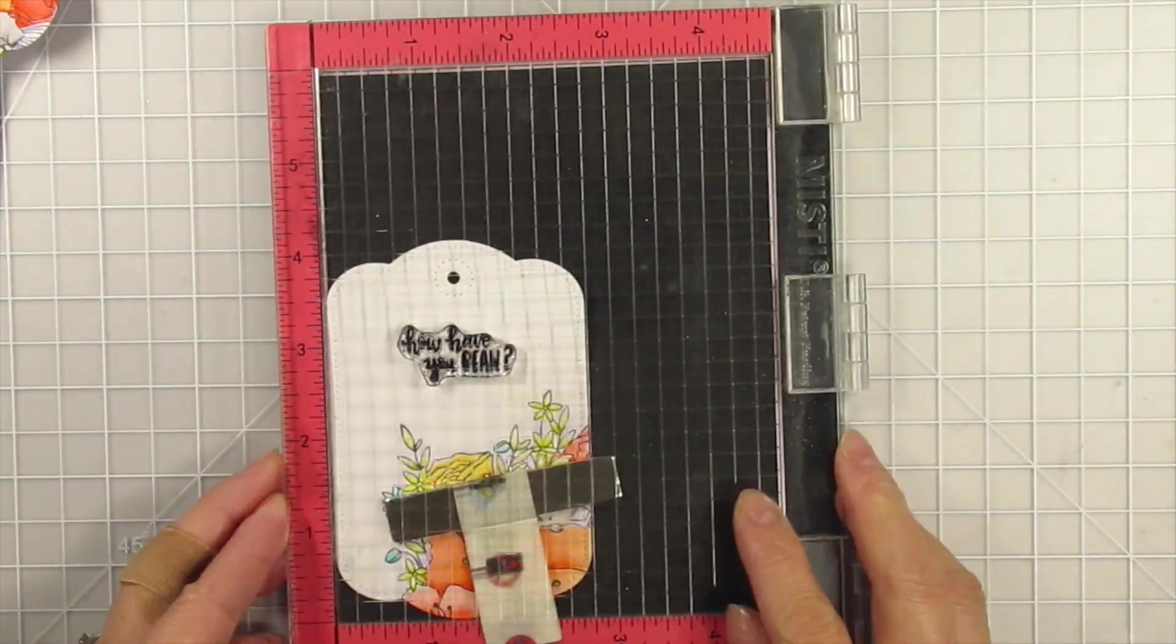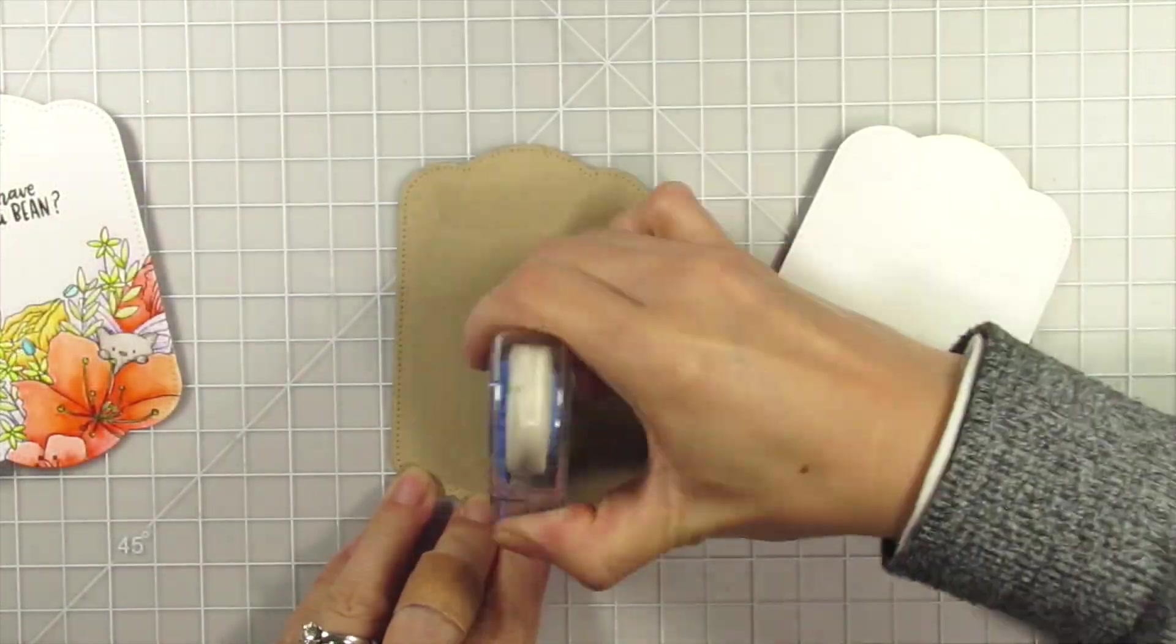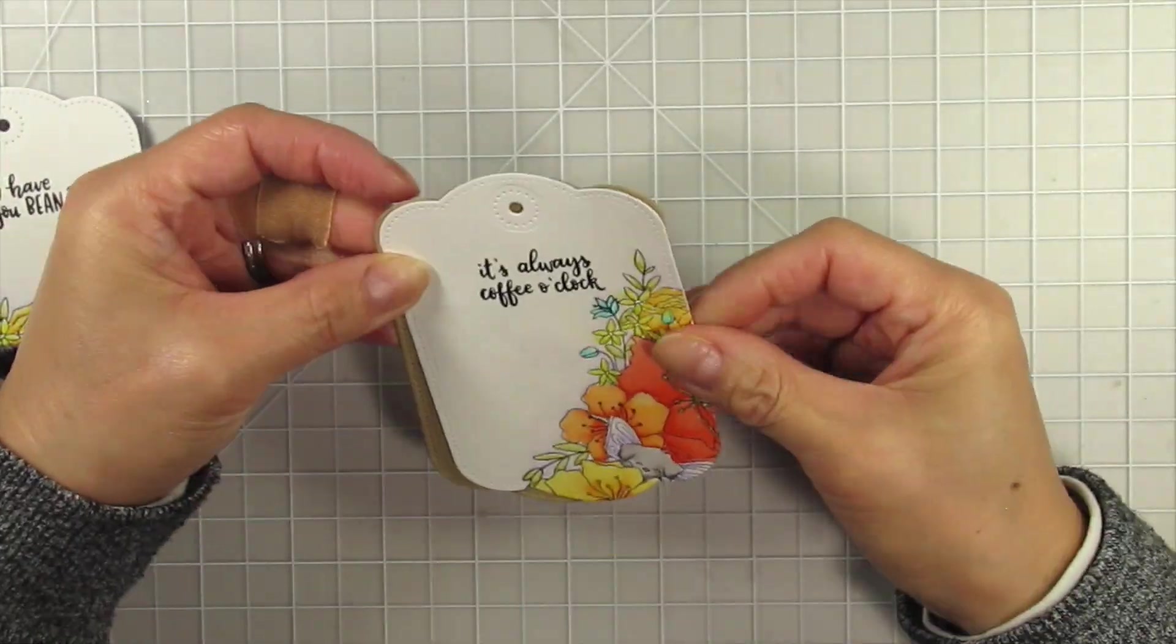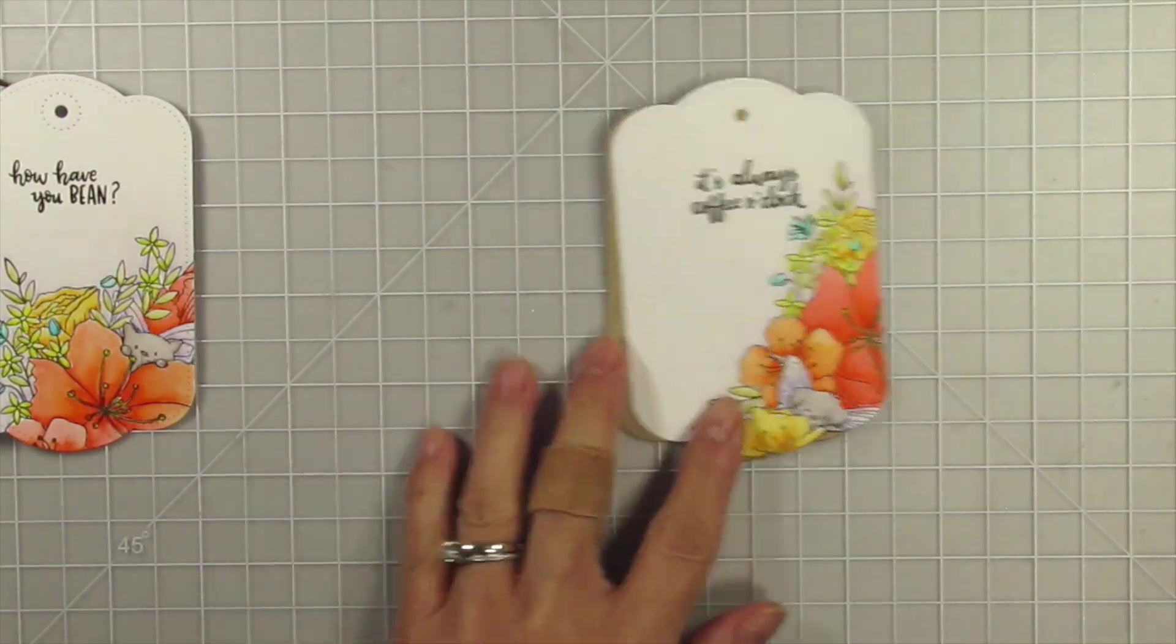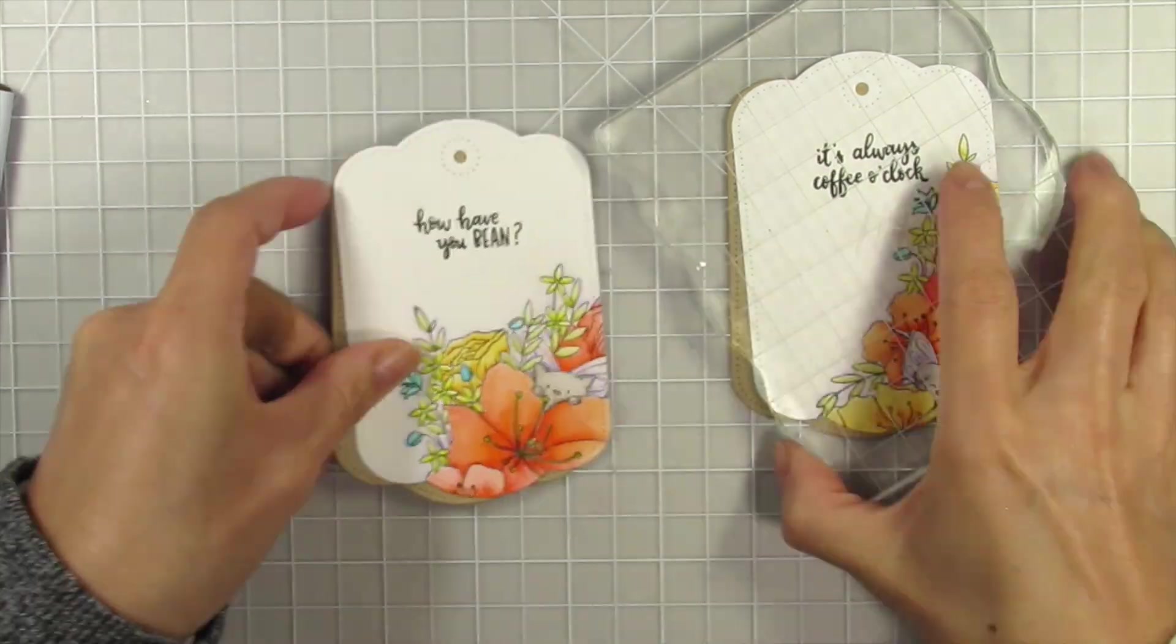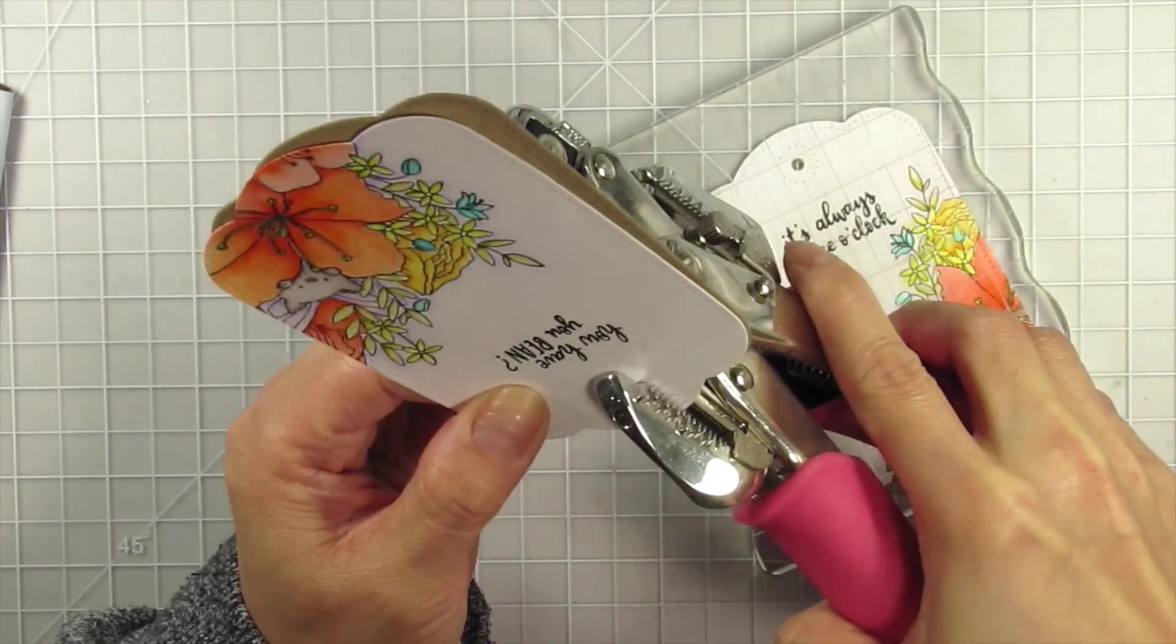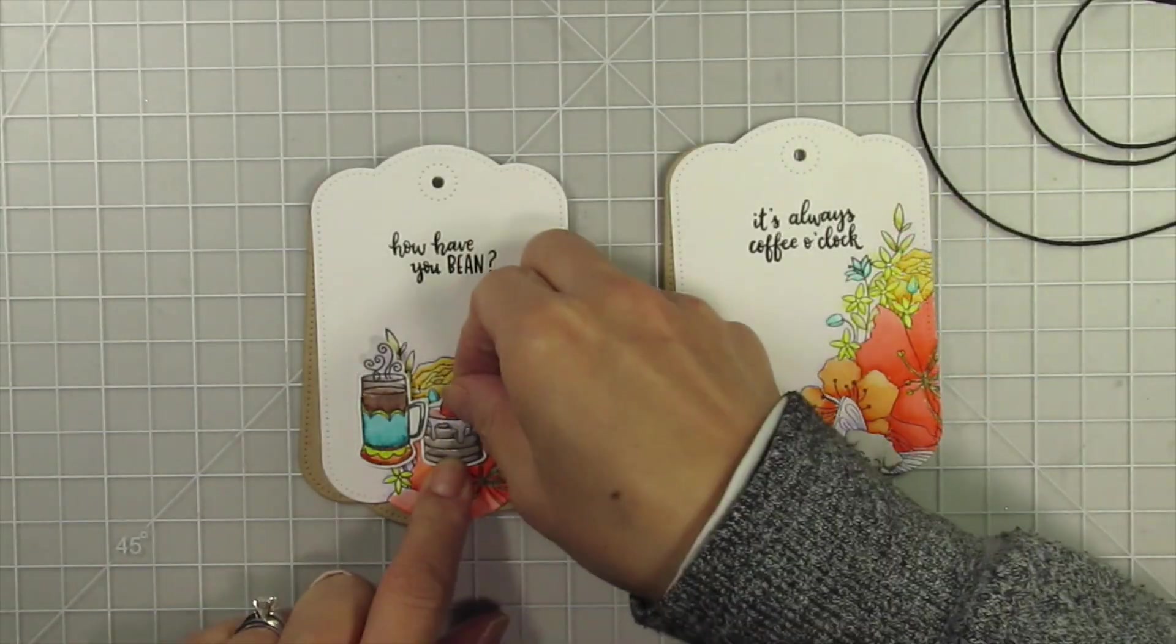When the tags are dry, I stamp the sentiments in both tags and die cut another layer of tags from craft cardstock. I use my tape runner to attach and offset them, and since the hole needs to be re-punched, it's easier to use the long reach crop-o-dile punch instead of trying to line up the die and possibly botch it since I'd be die cutting through two layers of cardstock.